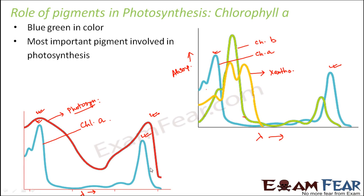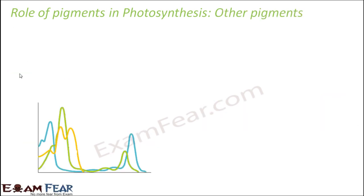Since the absorption spectrum of chlorophyll A and the action spectrum of photosynthesis are very similar to each other, but this similarity is not present between the photosynthesis spectrum and the absorption spectrum of chlorophyll B or xanthophyll, that is why we say chlorophyll A is the main pigment involved in photosynthesis. Wherever chlorophyll A absorbs more light, those are the regions where the rate of photosynthesis is also maximum. So without chlorophyll A, photosynthesis cannot take place.